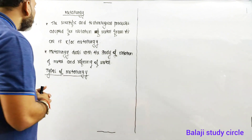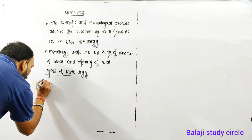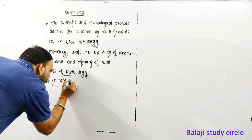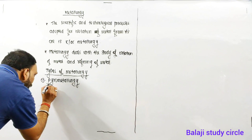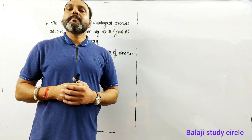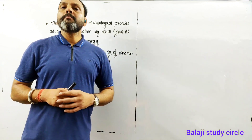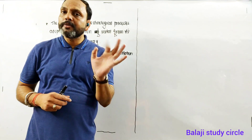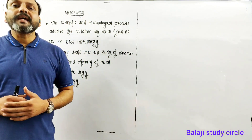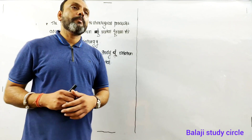Metallurgy can be discussed in three parts. The very first type is pyrometallurgy. Pyrometallurgy is called high temperature metal extraction. When we take metal ore and use a suitable reducing agent at high temperature, we isolate or reduce the metal from the ore — this process is pyrometallurgy.